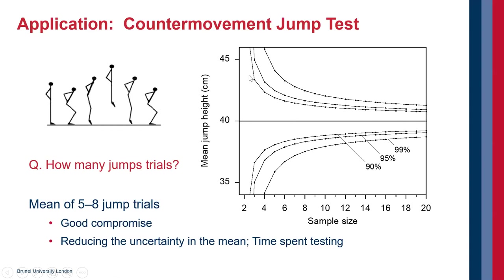And likewise, we don't want to be in this region here, where we have too few trials, because that means the uncertainty in the mean value is quite large. So there's a good compromise region, which is somewhere between about five and eight trials, a good compromise between reducing the uncertainty in the mean and the time spent testing.